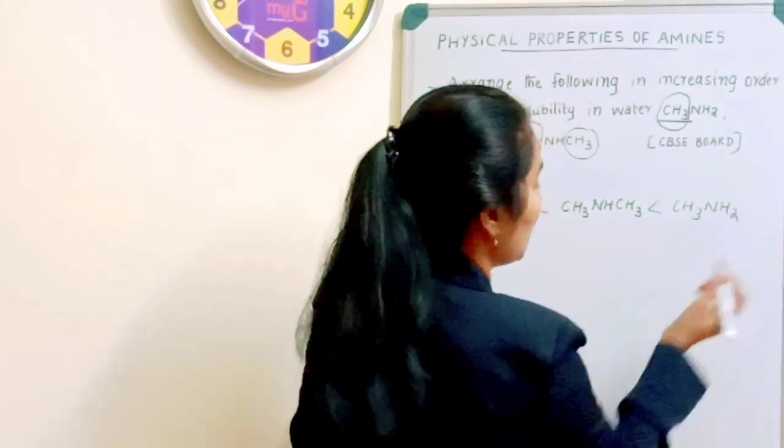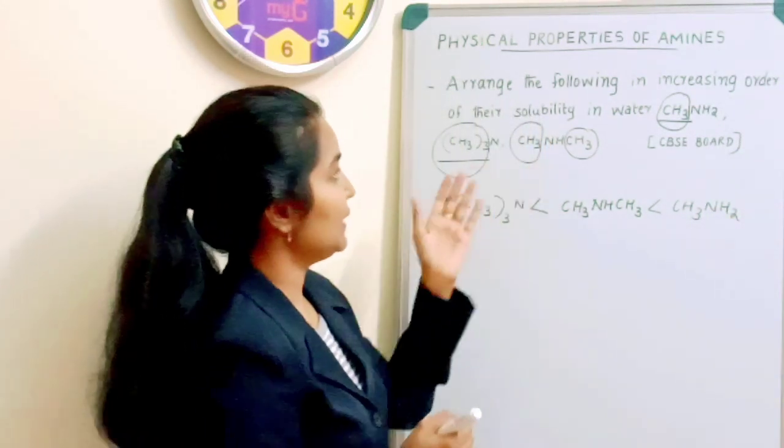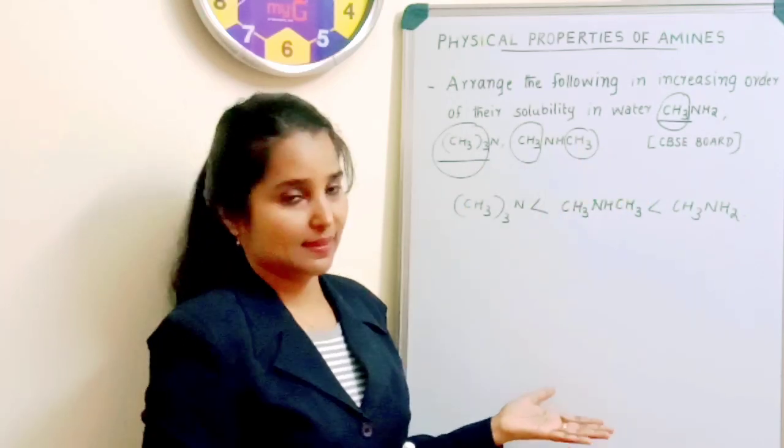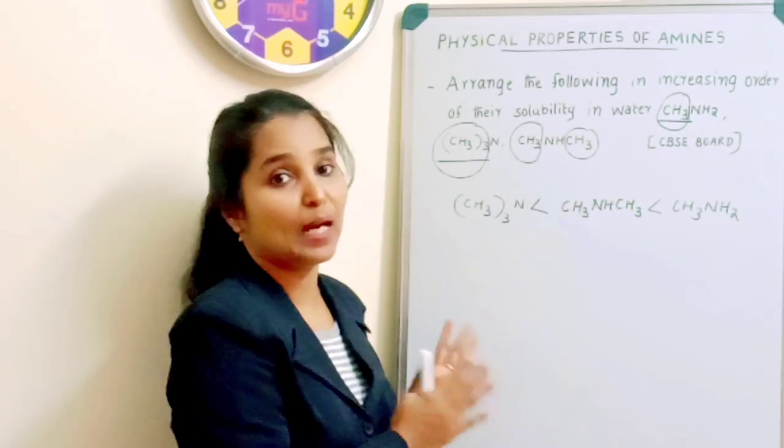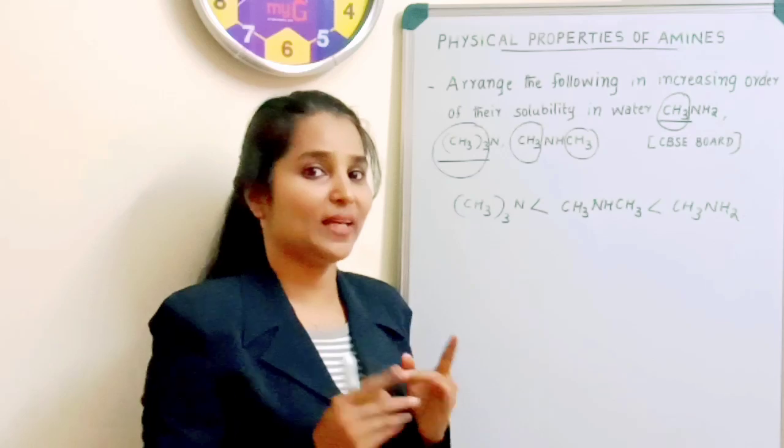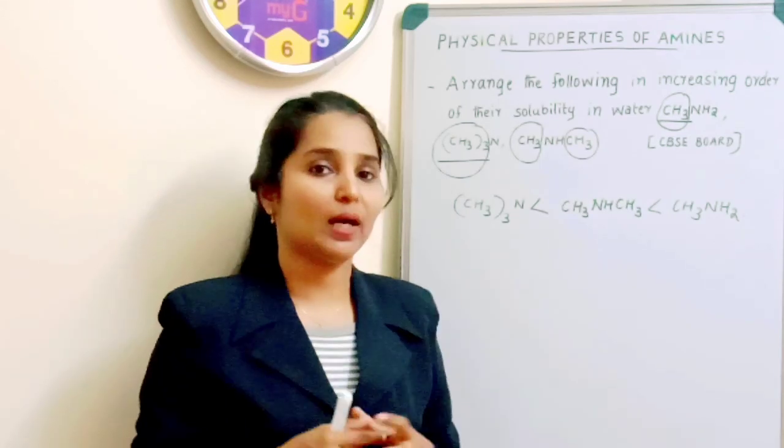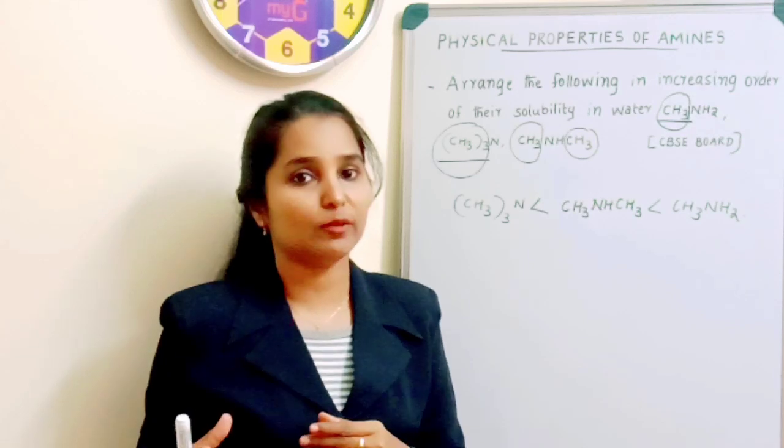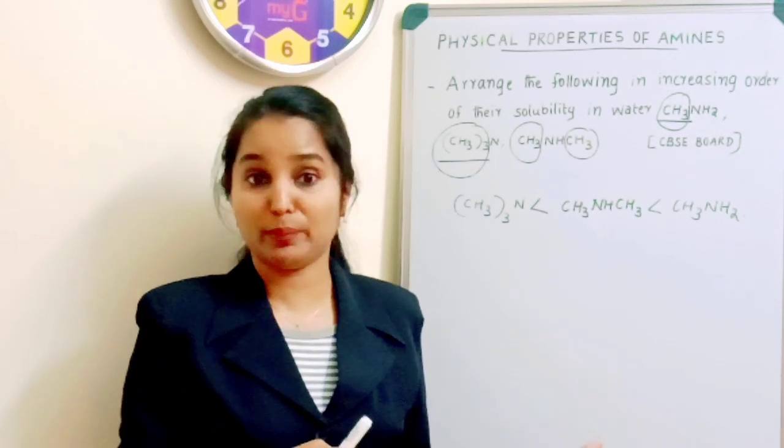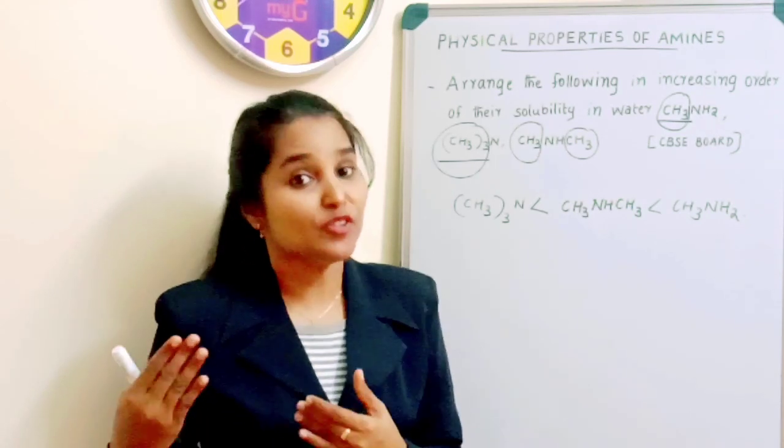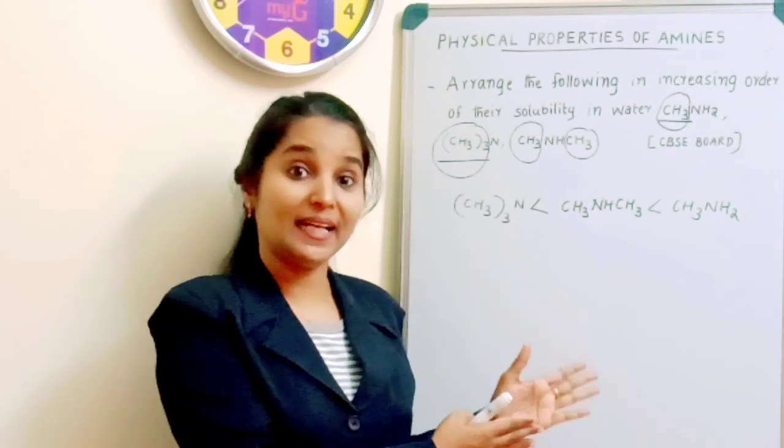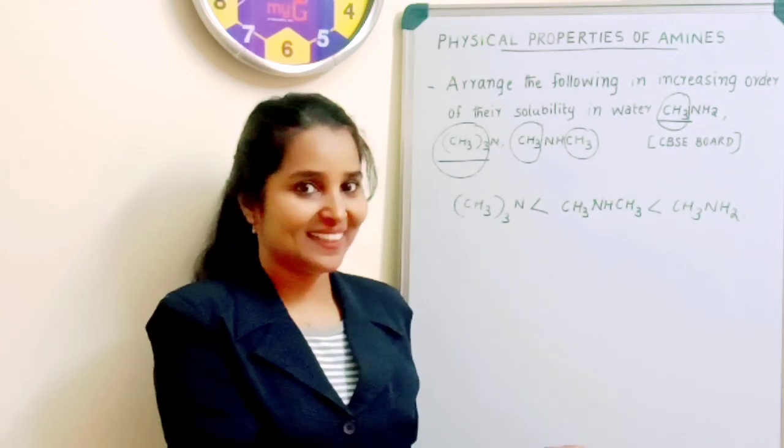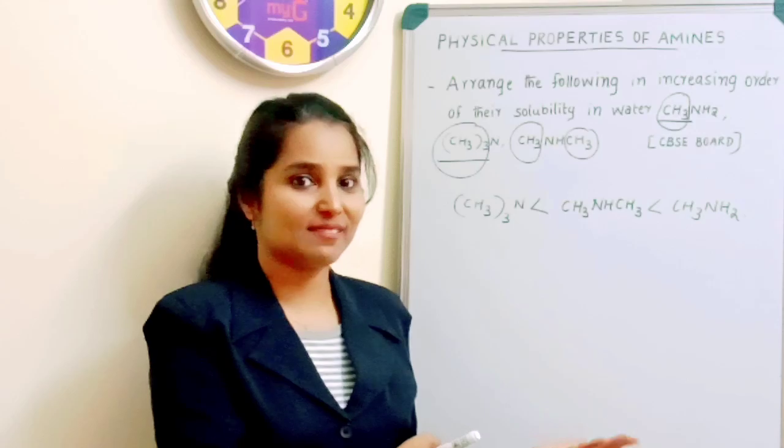So this will be the order of solubility of amines when considering these three amines. So you can easily understand. Look at the hydrocarbon part. The amine that is having the longest hydrocarbon part will be least soluble in water because hydrocarbons are not soluble in water, but amine is soluble in water. I think you have understood it. It's very simple, right?